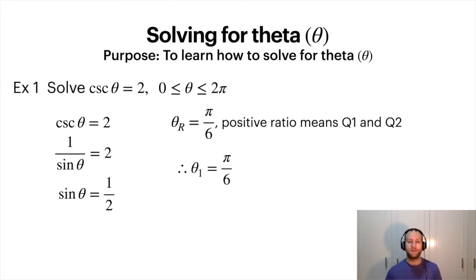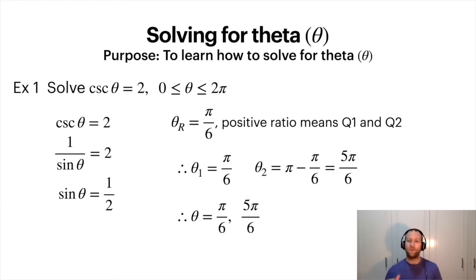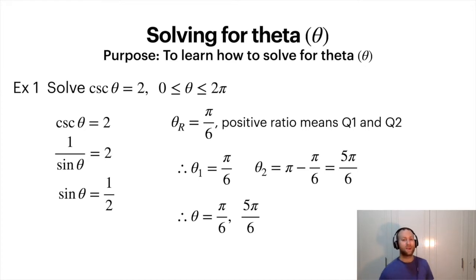Therefore theta one is pi over 6, because quadrant one is just the reference angle, and for quadrant two we do pi minus the reference angle. So here are my two angles — that's all I have in the range. Notice the pattern: first get your ratio by itself equal to something, look for the reference angle and which quadrants you're in, then use the reference angle and quadrants to solve for the angles in those positions and compare to the range or get the general solution.